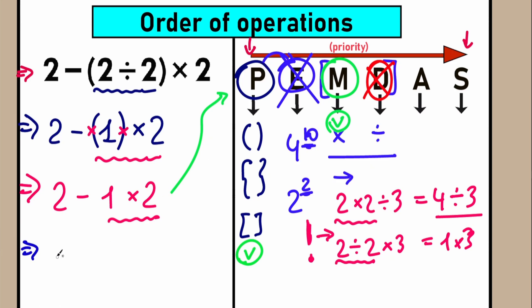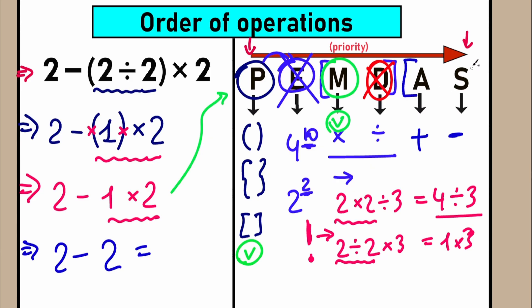As a result, we have 2 minus 1 times 2 equals 2. And at this point, when we have the expression with addition and subtraction, A stands for addition and S stands for subtraction — you don't need the order of operation anymore for this. We can mention right here we don't have addition, we have only subtraction. So 2 minus 2 equals zero. It looks like zero is the correct answer to our question according to PEMDAS order of operation.